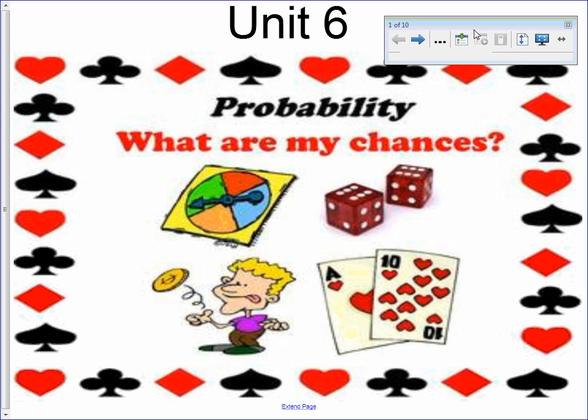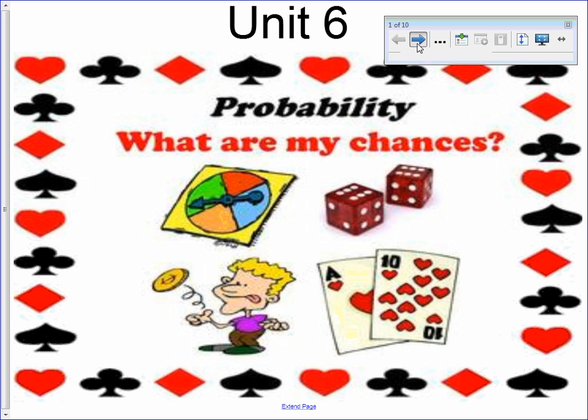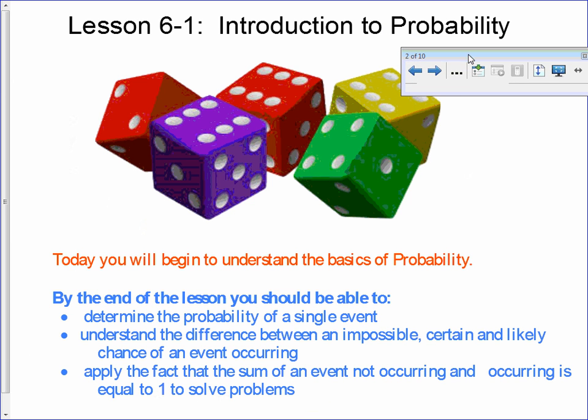And of course, you can go and re-watch the video at home as well if you'd like to review. So probability — what are my chances? We're just going to do an introduction today. By the end of class, you should be able to find the probability of a single event. You will understand the difference between a probability that's impossible, one that's certain, and we'll put numbers to that. And you're going to use the fact that the sum of an event not occurring and occurring is equal to one.